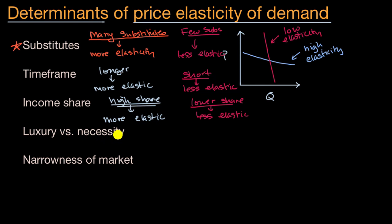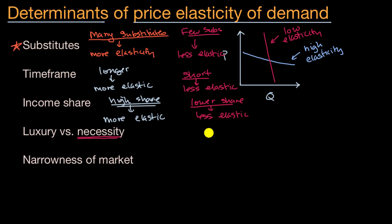What about luxuries versus necessities? Let's start with necessities. If something is something you absolutely need, then even if the price goes up a good bit, as long as you can still afford it, you might still go for it. For example, if you're a diabetic and need insulin — if the price of insulin rises 20, 30, 40%, assuming you can still afford it, you would still buy the same quantity. So if something is a necessity, you're going to be less price sensitive and less elastic.